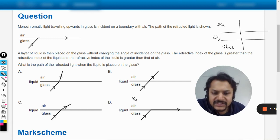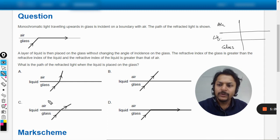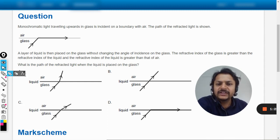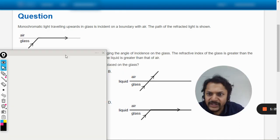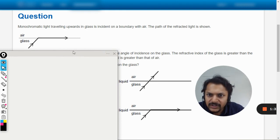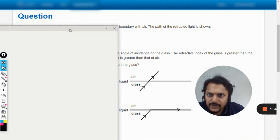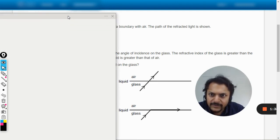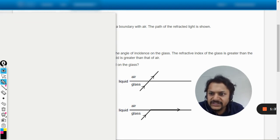My dear students, there is a concept here. We learn this concept when we deal with the multiple layers of different mediums and the light is trying to pass through it. So let me explain this thing. Let us see what happens when the light is facing multiple mediums.